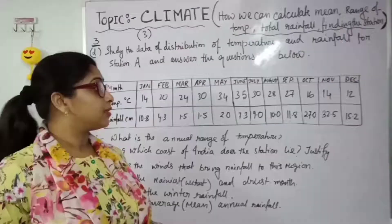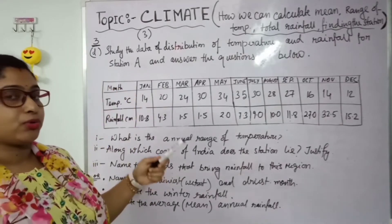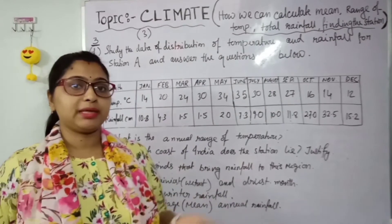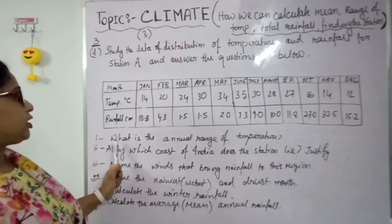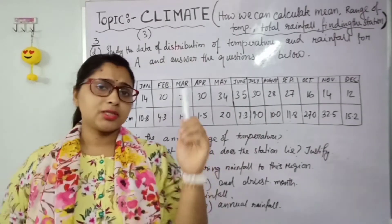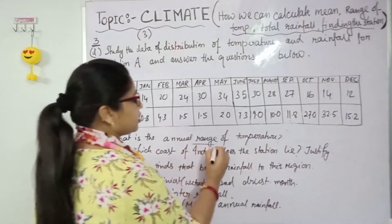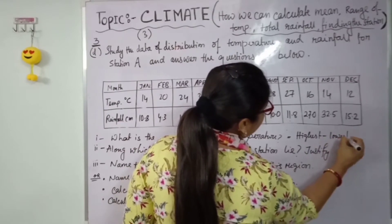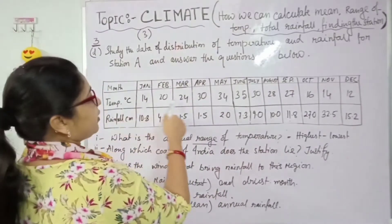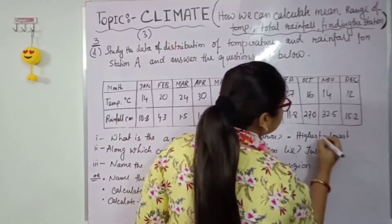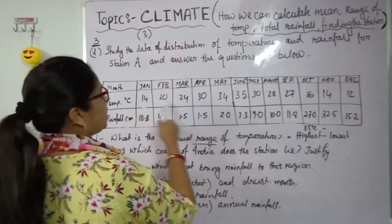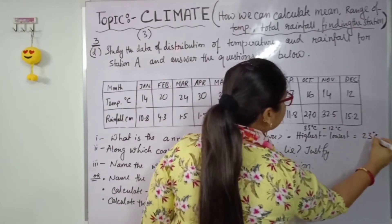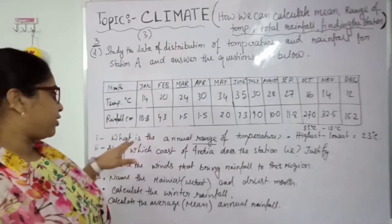Now let's look at another example. Here I have written another question for station A, with different data — temperature and rainfall are given. The question asks: what is the annual range of temperature? Range means difference — highest minus lowest. The highest temperature in the table is 35°C and the lowest is 12°C, so 35 minus 12 equals 23°C. That is the range of temperature, and you get one mark for this.